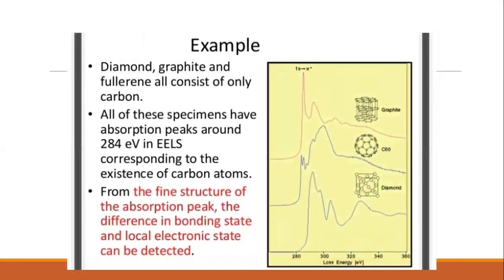For example, in this example we use diamond, graphite, and fluorine. They all consist of only carbon. In this specimen, absorption peaks around 284 electron volts in ELS correspond to the existence of carbon atoms. From the fine structure of the absorption peak, the difference in bonding state and local electronic state can be detected.